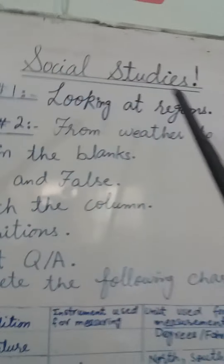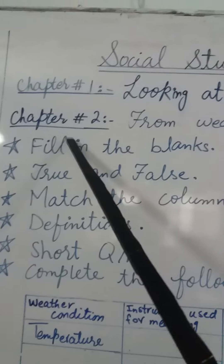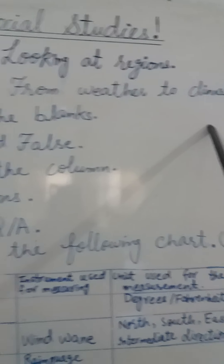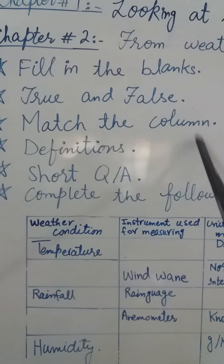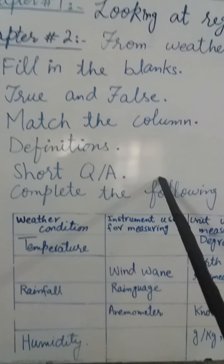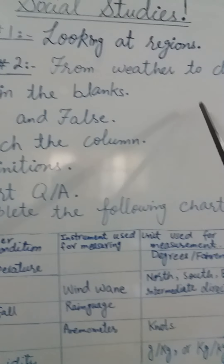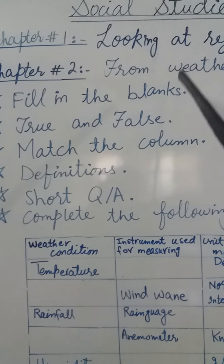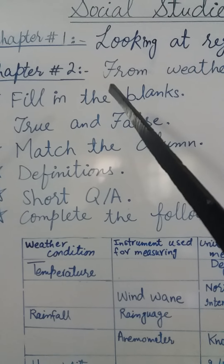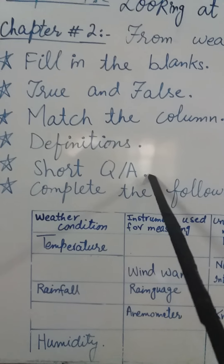Moving towards social studies, there is chapter number one — looking at regions — and chapter number two — from weather to climate. There are again fill in the blanks, true and false statements, match the column, definitions, and short question answers of both chapters. As there are missing definitions in 'From Weather to Climate', there is no worry — the definitions included in chapter one or two you will have to learn by heart.